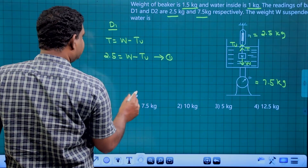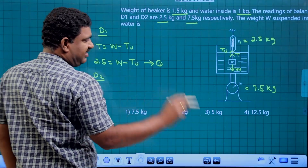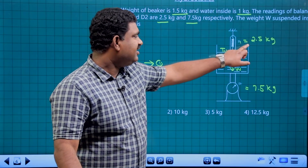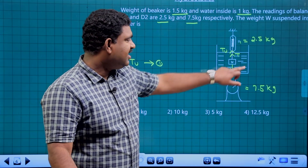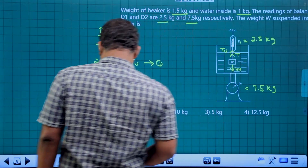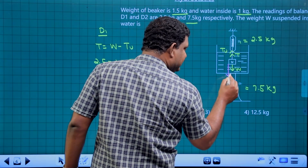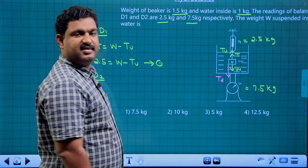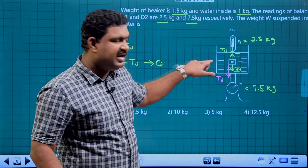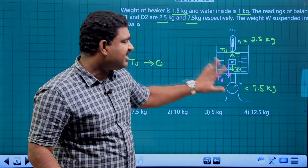For D2, the reading is 7.5 kg. D2 measures the total weight on the beaker side. We have a down thrust acting in the liquid, so D2 reading includes the down thrust contribution.